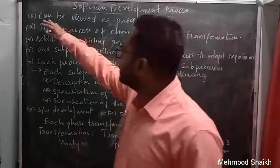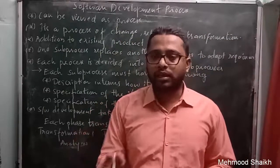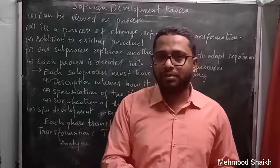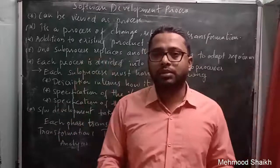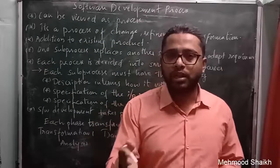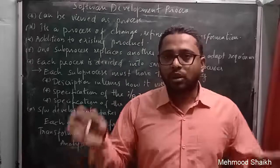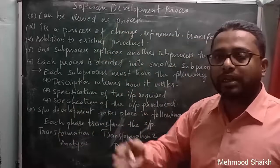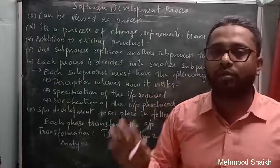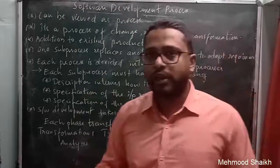The first point is: a system can be viewed as a process. Software development is a complete process — it contains various activities starting from requirement gathering all the way to maintenance, with seven to eight steps involved. Any organization or development team that wants to develop a software application has to go through all these various steps or phases, which together are called a process.